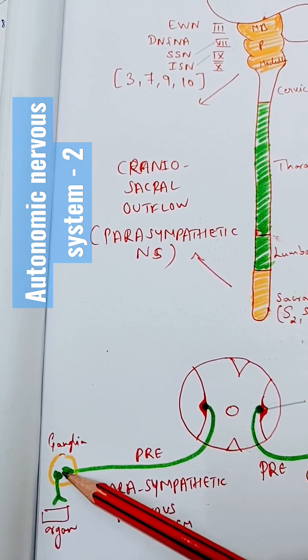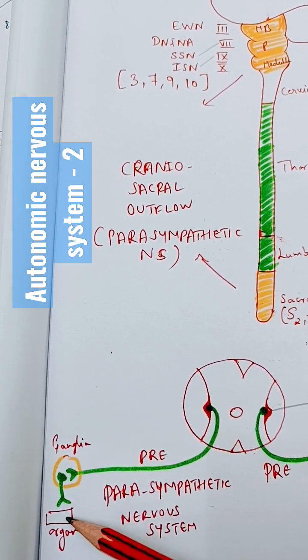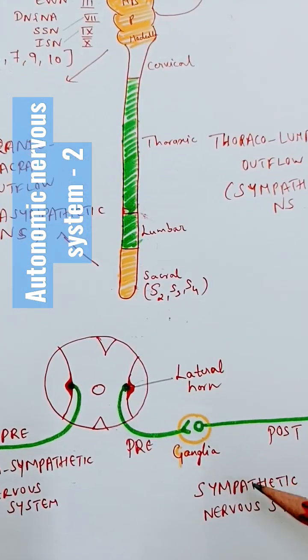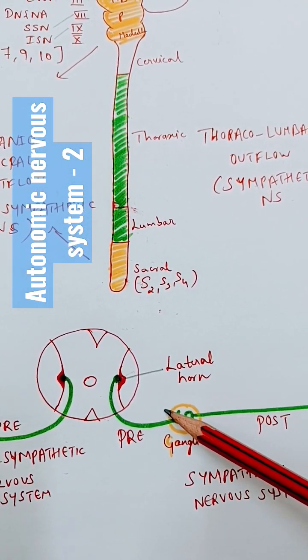These are very small postganglionic neurons. So in the sympathetic nervous system, the preganglionic neuron is shorter, whereas in the parasympathetic system, the preganglionic neurons are longer.